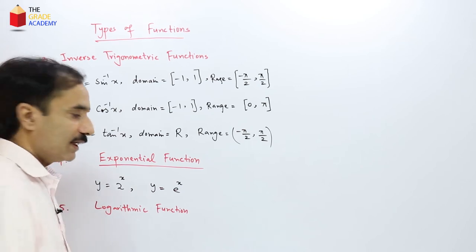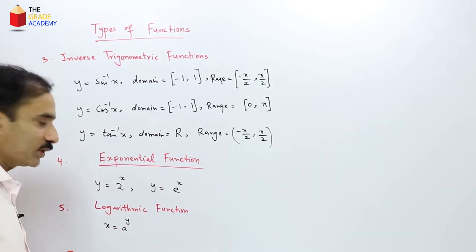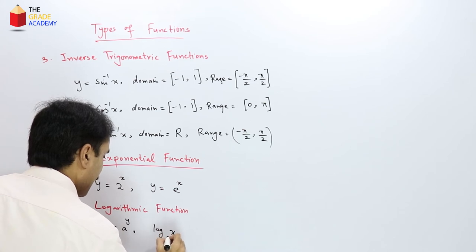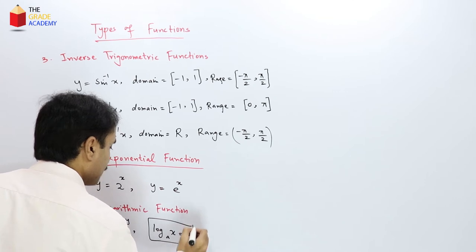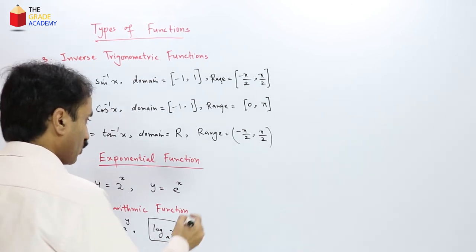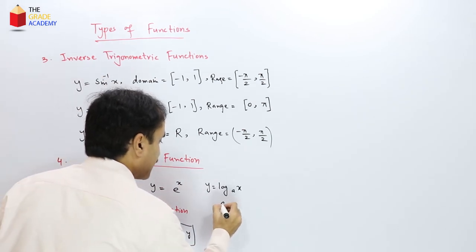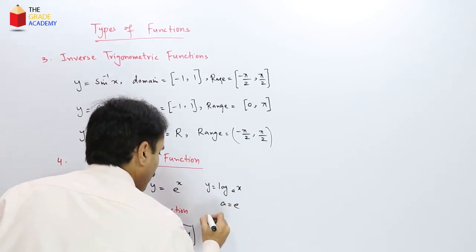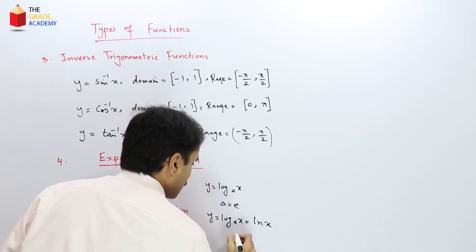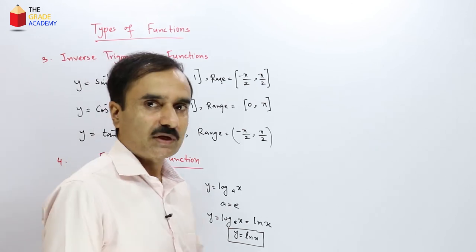A logarithmic function comes from the exponential equation x = a^y, which can be rewritten as log_a(x) = y. So y = log_a(x) is a logarithmic function. When the base a is replaced by the special number e, we write y = ln(x), meaning the natural logarithm with base e.